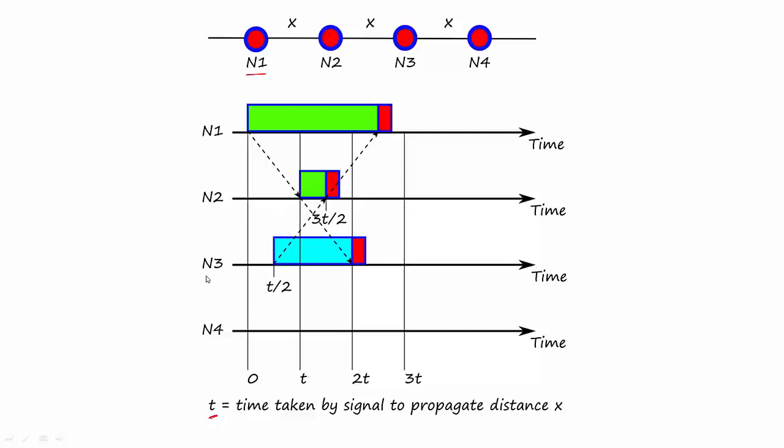N3 has a packet to transmit at time t over 2. At that time when it senses the channel, it sees that the channel is idle because it has not yet received the first bit of N1 which does not come until 2t. So it will assume the channel is idle and begin transmission. As you can see, this transmission will collide with N1's transmission. So N1 and N3 are transmitting at different times but still their transmissions are colliding.